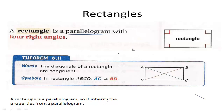We already know all of the properties of the parallelogram. In addition to those, a rectangle's diagonals are congruent. That means diagonal AC is congruent to DB. So if DB measures 10, AC also measures 10. And the diagonals also bisect each other — that property still remains because a rectangle is a parallelogram.